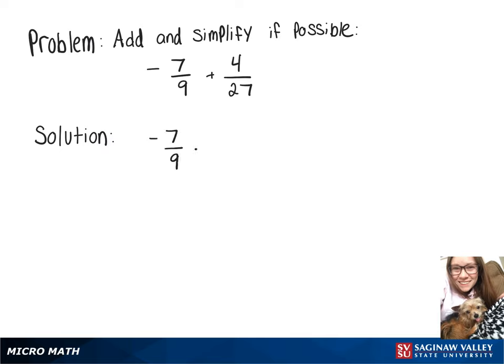So we can take our negative 7 ninths and multiply it by 3 over 3, since that's just a form of 1. And when we do that, we get negative 21 over 27.